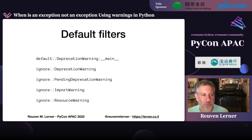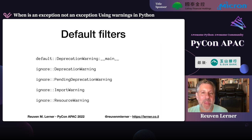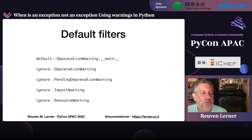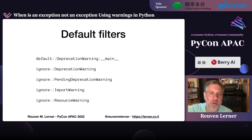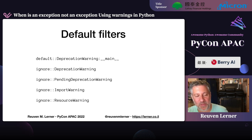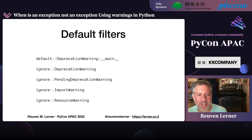What are the default filters? The default behavior for DeprecationWarning is shown in the main program — if we have a deprecation warning in the main program (the first program that's run), we'll get the default output. But otherwise, deprecation warnings are ignored. Why? Because if I downloaded something from PyPI, I don't want all the deprecation warnings from its internals — just those in my own code. Similarly, PendingDeprecationWarning, ImportWarning, and ResourceWarning are all ignored by default.